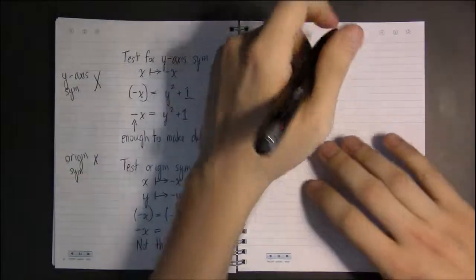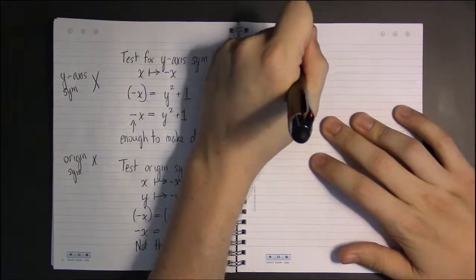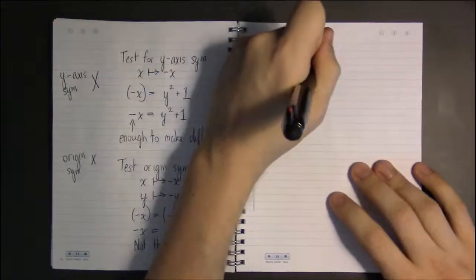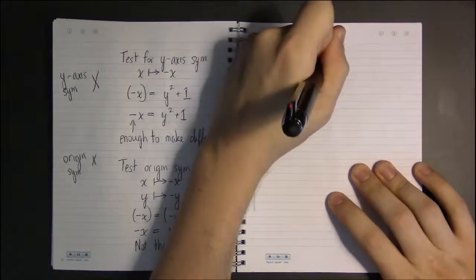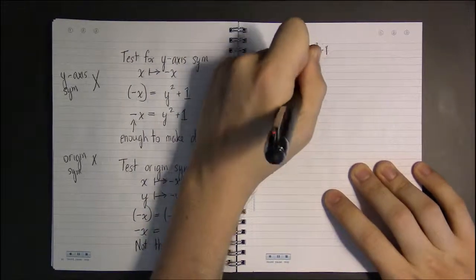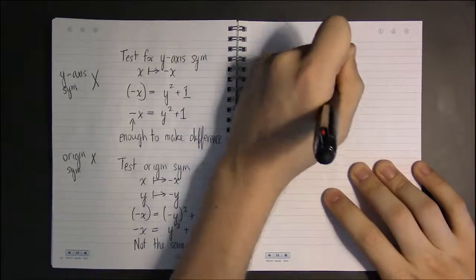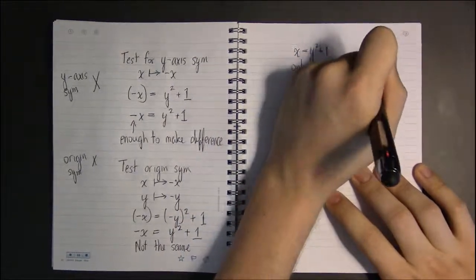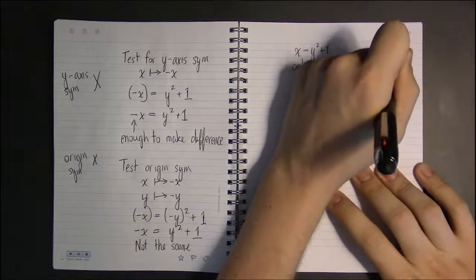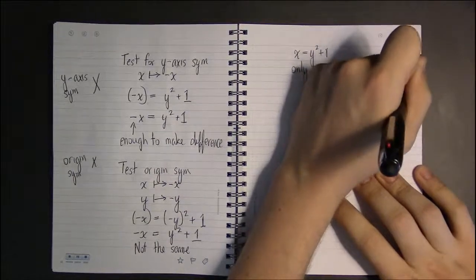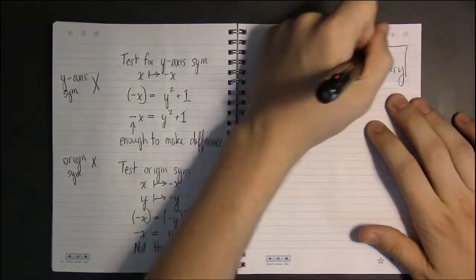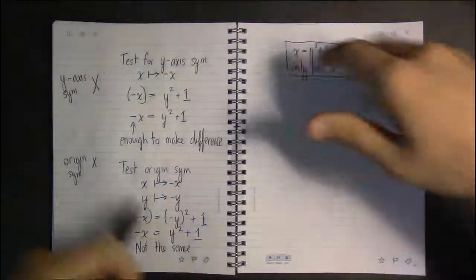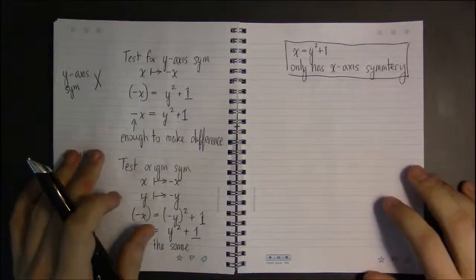To summarize, x equals y squared plus one only has x-axis symmetry. The top half mirrors the bottom half. The left does not mirror the right, and it doesn't look the same if I turn the page upside down.